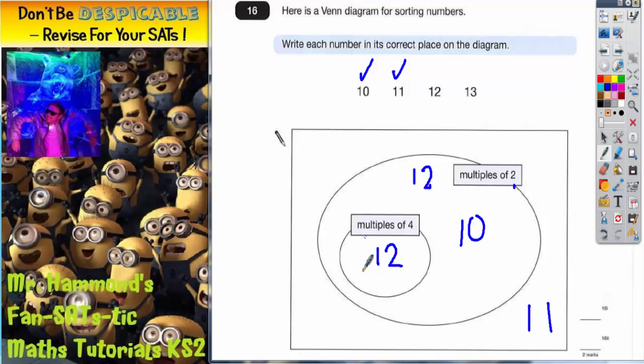So I would not put it in again, and you may even lose a mark if you do put it in again, because you don't fully understand that being inside multiples of 4 also means being inside multiples of 2. So that's the number 12 sorted.